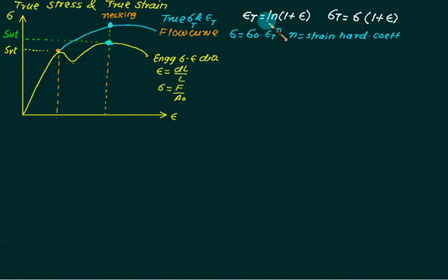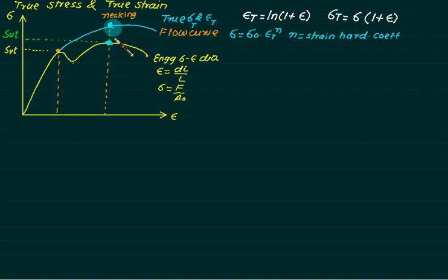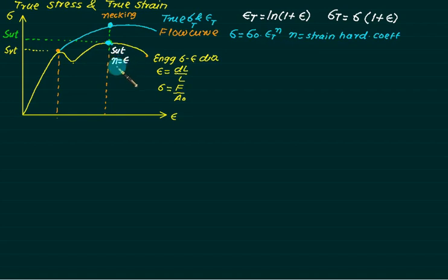Epsilon is dimensionless, and so is strain. For SUT, the value of n is the same as epsilon-t. So at the SUT condition, n equals epsilon-t.